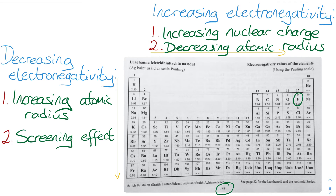Electronegativity values increase going across the period because of the increasing nuclear charge and decreasing atomic radius. Fluorine is the most electronegative atom in the periodic table. It is more electronegative than neon because neon is inert and does not attract electron pairs or form bonds. If you look at the electronegativity table on page 81 of your log tables, you will see the noble gases are not included, as these elements have no tendency to form bonds.